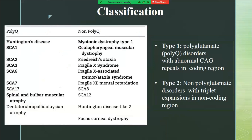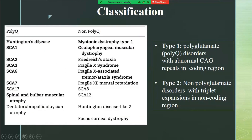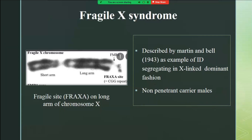We broadly classify them as polyglutamine disorders and non-polyglutamine disorders. Polyglutamine means CAG repeats — CAG codes for glutamate — so if they get expanded beyond the limit they are called polyglutamine repeats. They generally occur in the coding region, the exon, or the splice site region. The prototype disorder is Huntington's disease. Non-polyglutamine disorders occur mostly in the non-coding region; the classic example is Fragile X syndrome.